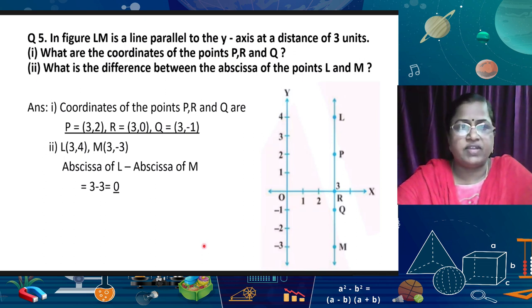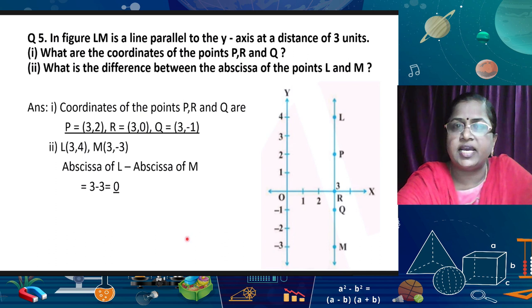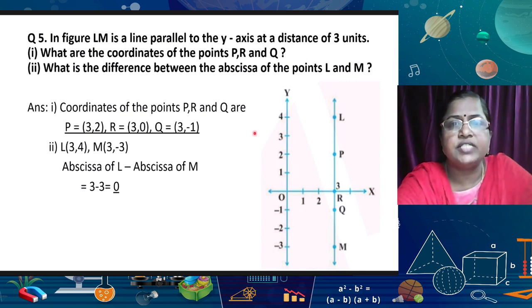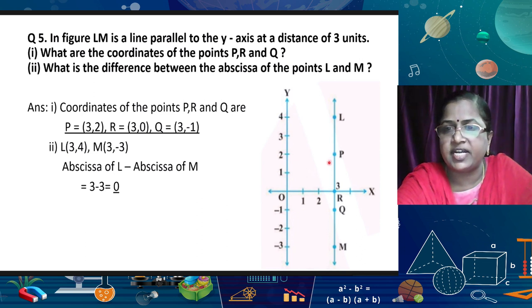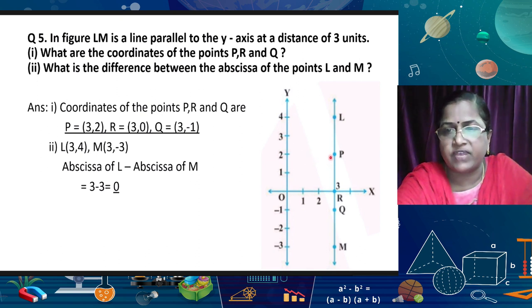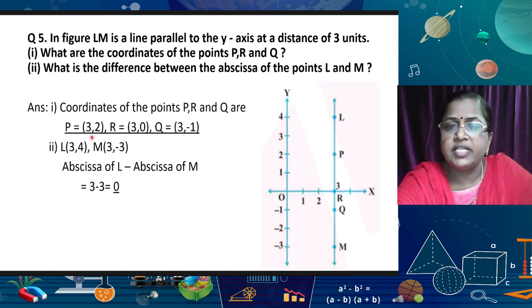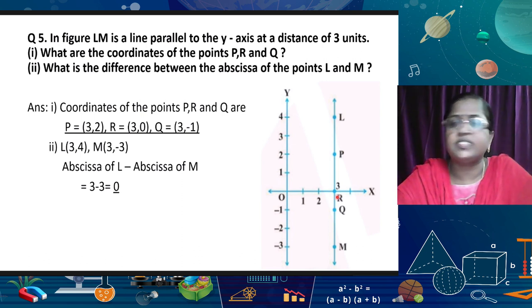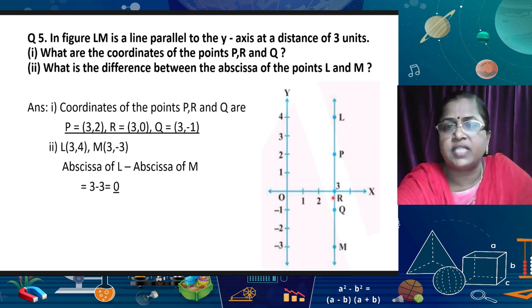Now, the next question: we are given in the figure a line parallel to the y-axis at a distance of 3 units. We can see the line passing through (3, 0). What are the coordinates of points P, R, and Q? First, we look at P directly — from the x-axis it is at 3, and on the y-axis this point lies at 2. So the coordinate of P is (3, 2). In the same way, we can find the coordinates of R, but it lies on the x-axis. A point lying on the x-axis always has y-coordinate 0. So point R is (3, 0).